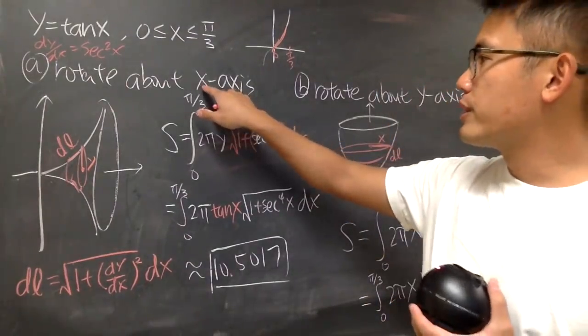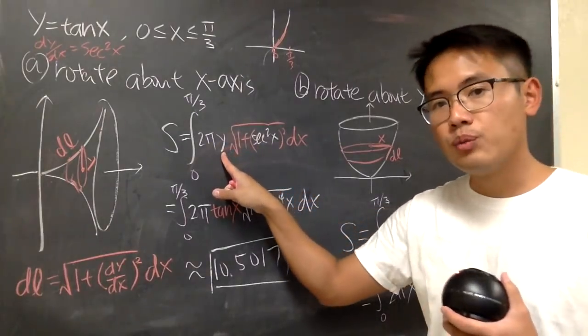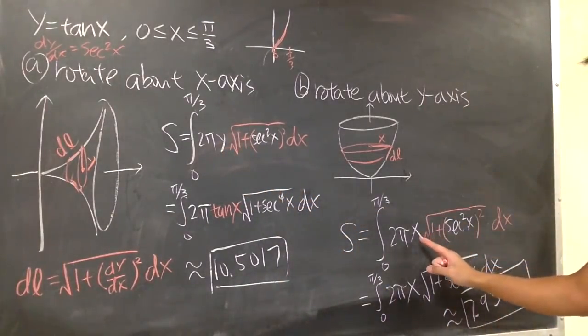So summary: when you rotate about the x-axis, the radius will be y. And when you rotate about the y-axis, the radius is x.